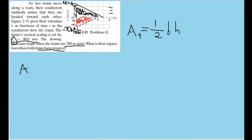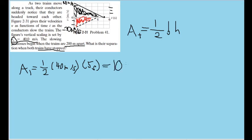Now let's first find the area of the top triangle, which is equal to one half times the height of the triangle, which is 40 meters per second, times the base of the triangle, which is in time. We can see that the train stops moving at five seconds, and that's also where the base of the triangle ends, from zero seconds to five seconds. So the base is five seconds. Plugging this in, that's 100 meters, meaning one of the trains stops after traveling 100 meters.